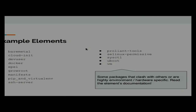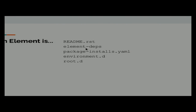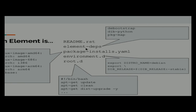An element lives in one directory and is a collection of configuration files and scripts. An element can declare dependencies on other elements in a small text file listing which elements should also be included. There's also a package-install specification where you list the packages to be installed during image creation. You can specify package names per-distribution because distributions typically name their packages differently.